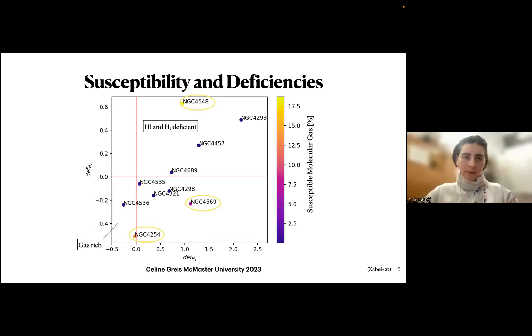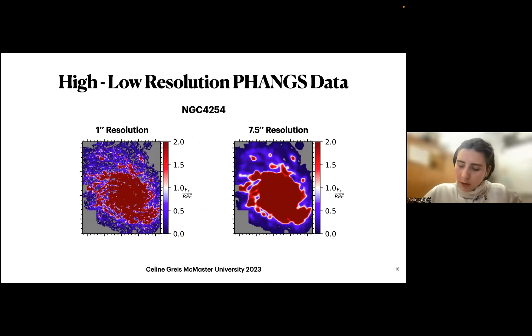We want to extend our sample and see if we can continue seeing this differentiation. Currently we use FANGS data and Virgo stellar maps. The overlap of those two surveys were only these 10 galaxies. But Virgo has also molecular gas mass maps, but they are in low resolution. We were looking at how the high and low resolution FANGS data compares to each other. You can see here the 1 arcsecond compared to 7.5 arcsecond resolution. We calculated how much gas is susceptible and the results overlapped. That gave us the green light that we now want to extend our analysis with the lower resolution Virgo data.